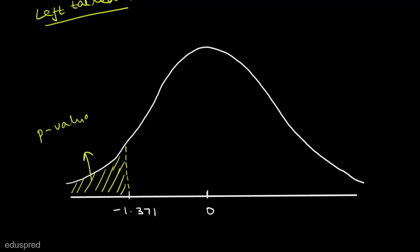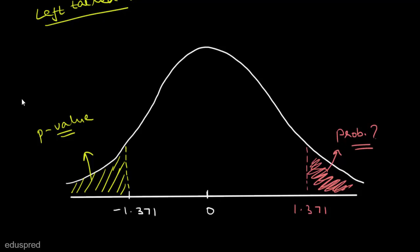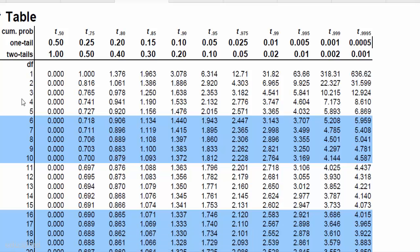Our problem now reduces to finding the probability of this shaded region, for which we use the t-table. Note that the t-distribution is symmetric, so finding the probability of the left shaded region equals finding the probability of the region to the right of 1.371. Let's have a look at the t-table. As you can see, this is how the t-table looks. We are given n equals 10, so the degree of freedom is 9.